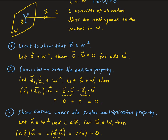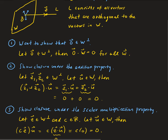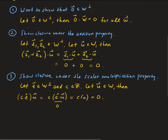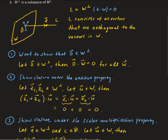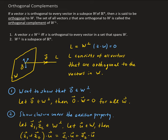So we've shown the three properties for the subspace of Rⁿ. Therefore, W perp must be a subspace of Rⁿ. It's a very simple idea, but it's very powerful. We're going to see an application of this later using what's called the least squares method.